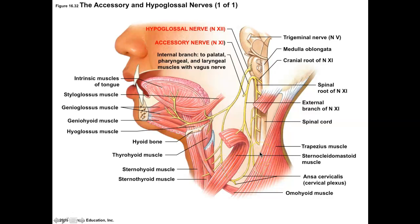Our last nerve, cranial nerve XII, is the hypoglossal — motor to the tongue only. Hypoglossal, glossal referring to tongue, comes away from the brain stem and innervates the tongue for all speech. You need to know the full table for the exam in your chapter 16 test.